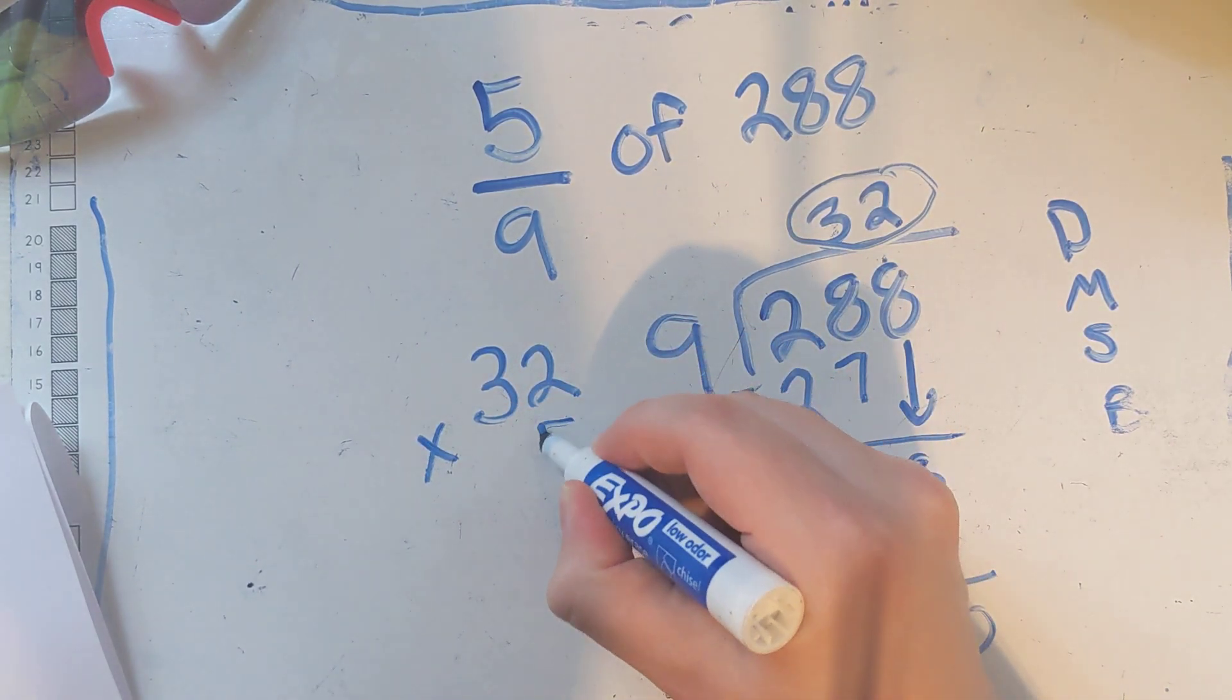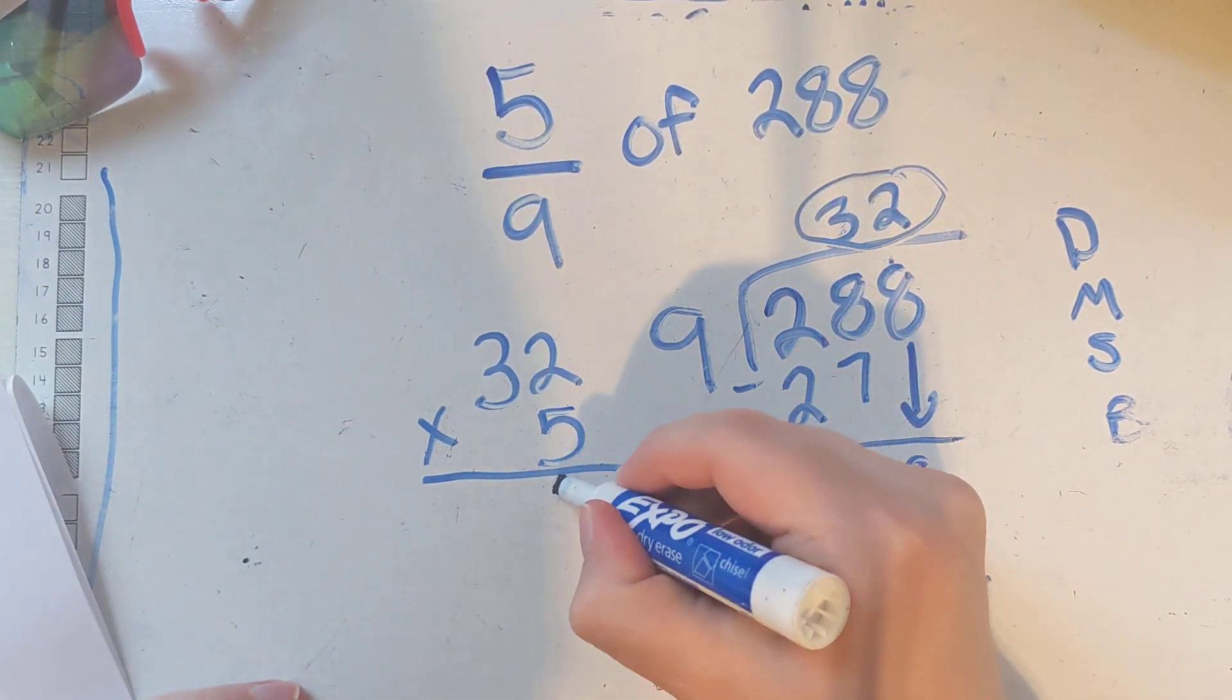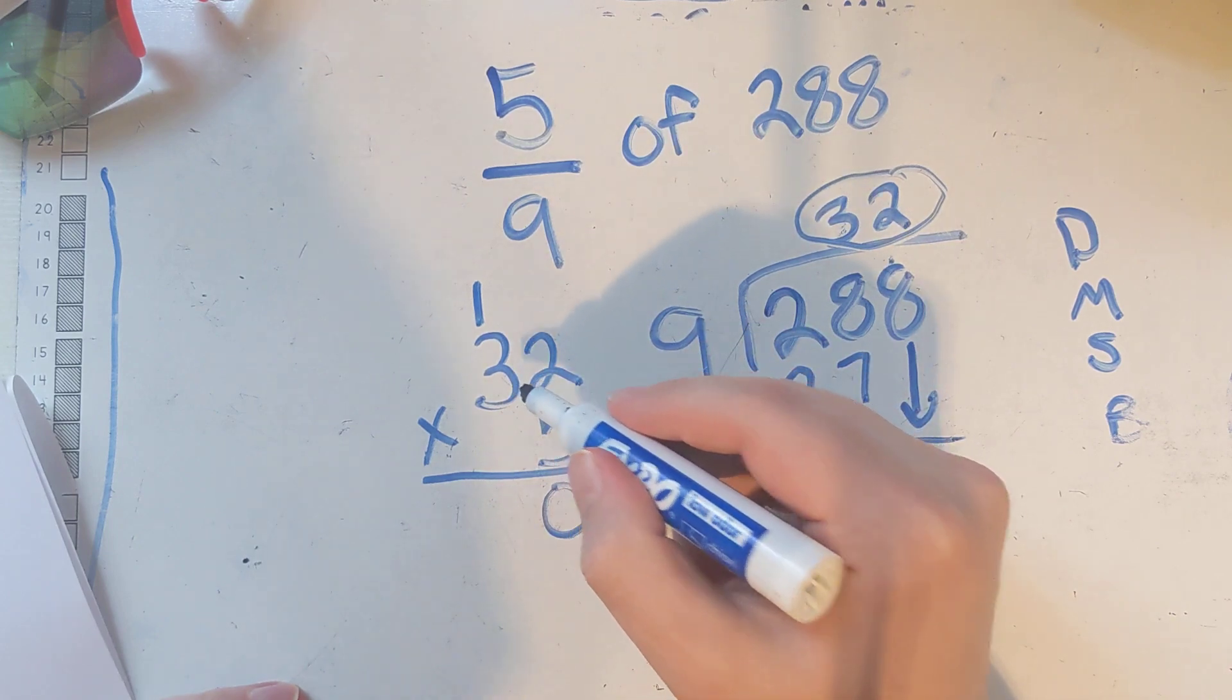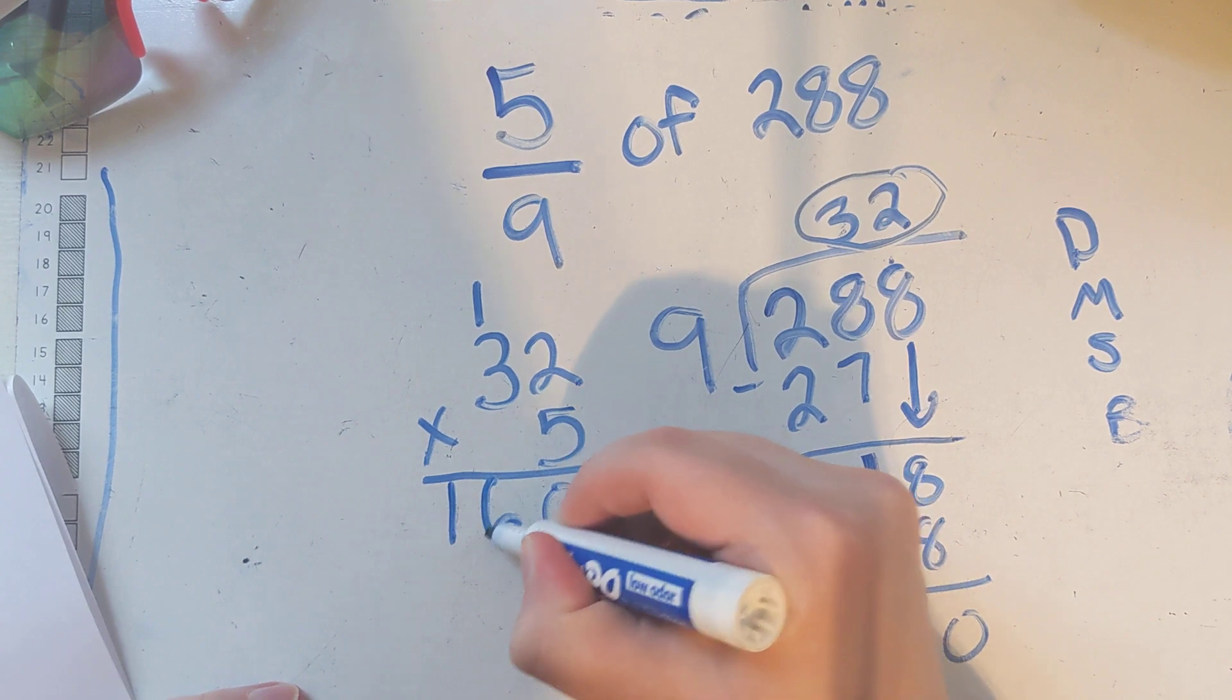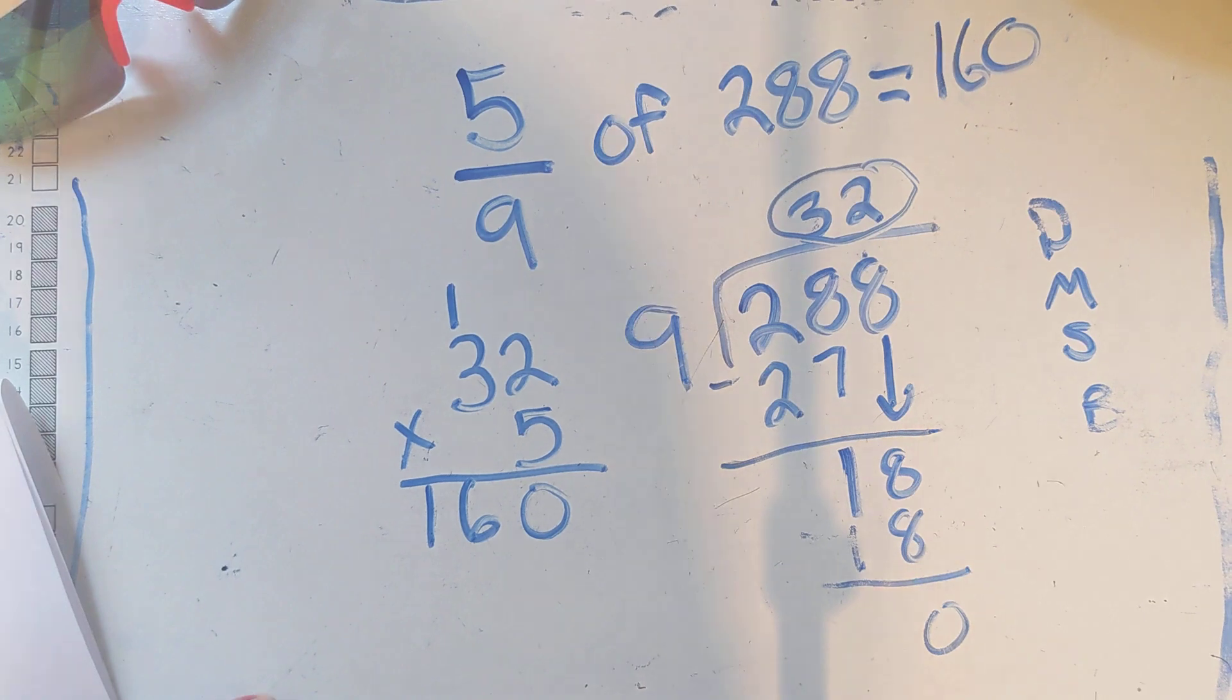...times 5. 5 times 2 is 10. 5 times 3 is 15, plus 1 more makes it 16. So we get 160 that way in way fewer steps.